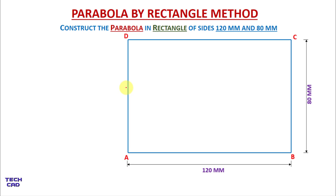Now I will give the namings to it — ABCD is my rectangle. After making this rectangle we are going to divide it into two equal parts. We will make a midpoint of AB over here and make a line so that your rectangle will be divided into two equal parts. I will give the namings to it — MN.